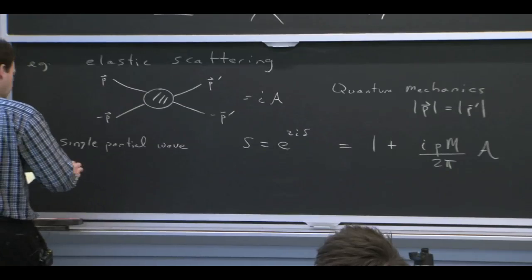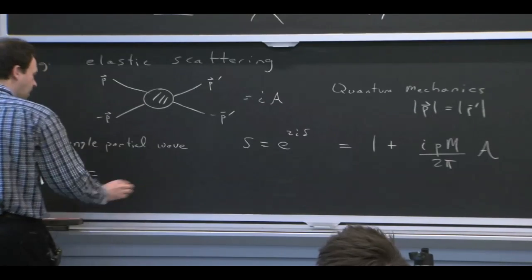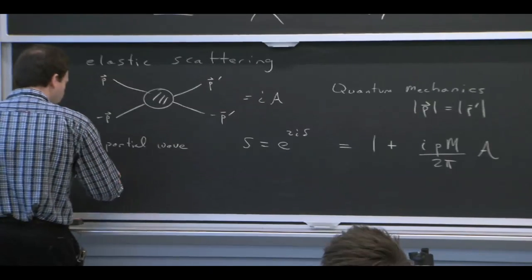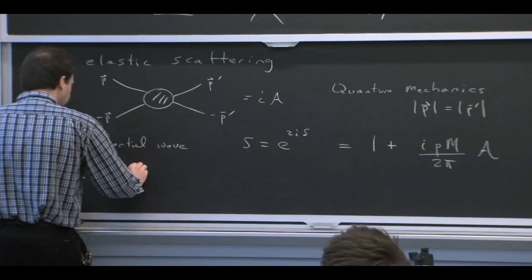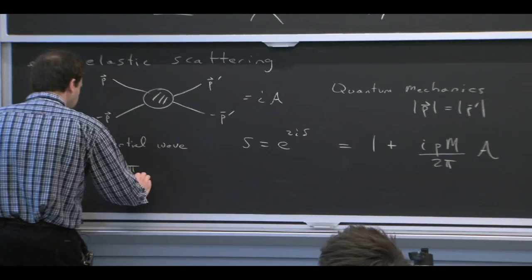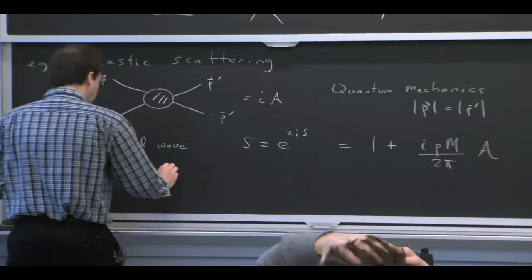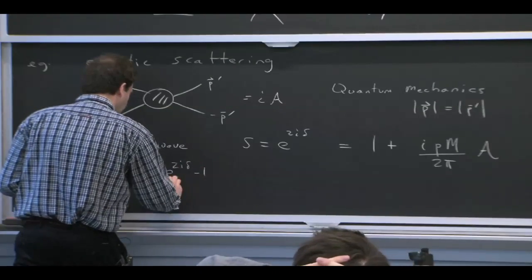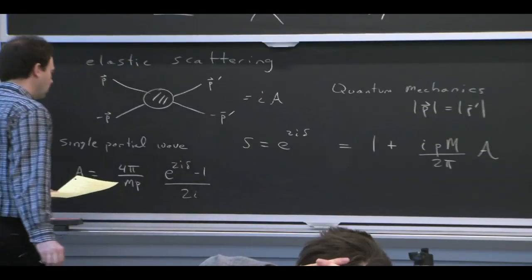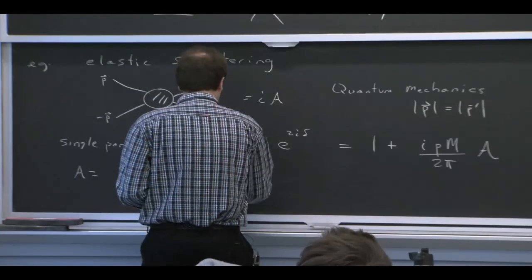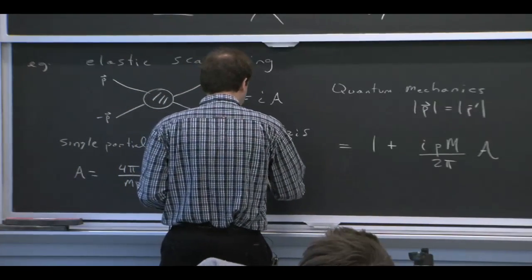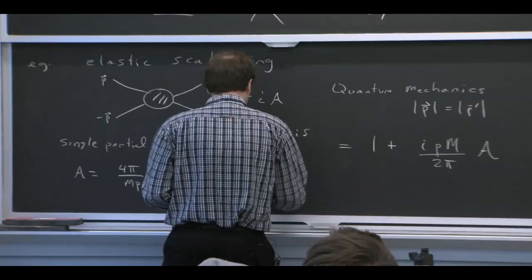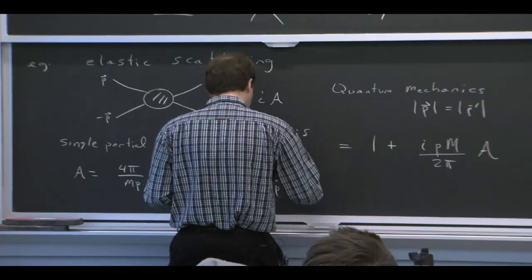And I guess the other thing we know is that by energy conservation, the magnitude of p is equal to the magnitude of p prime. All right? OK. So if we rearrange this equation and we write it as A and put the phase, solve for A, do that.